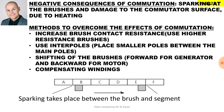The negative consequences of commutation: we end up with sparking at the brushes and damage to the commutator surface due to heating. There are a few methods to overcome the effects of commutation: we can increase the brush contact, use interpoles, shift the brushes, and use compensating windings.